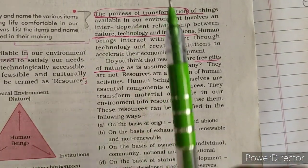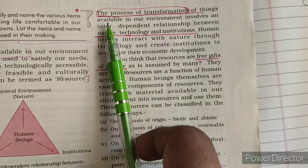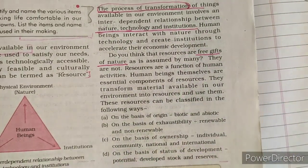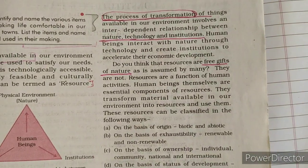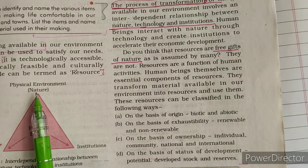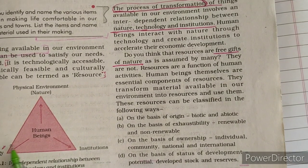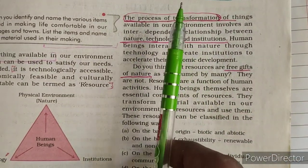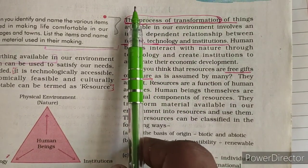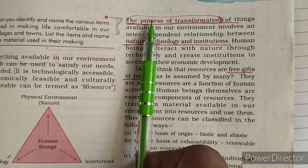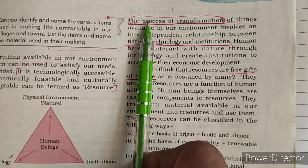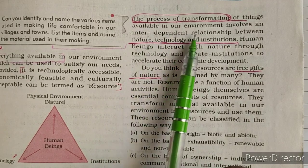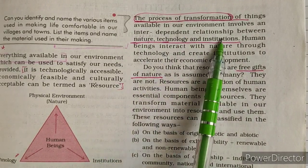The process of transformation of things available in our environment involves an interdependent relationship between nature, technology, and institutions. Human beings interact with nature as well as technology, and we interact with institutions to convert raw material into resource. We transform it through this interdependent relationship between nature, technology, and institutions.